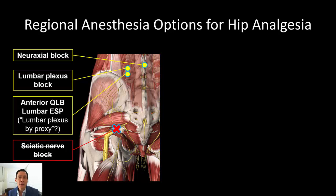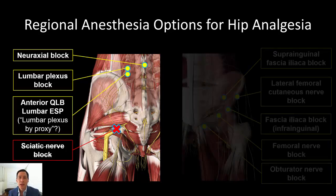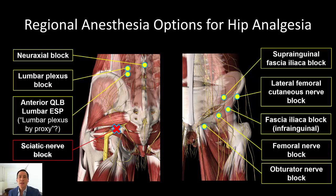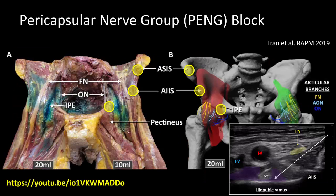The sciatic nerve is not usually targeted because of the motor block that usually accompanies it. Instead, we usually target the branches of the lumbar plexus: the lateral femoral cutaneous nerve, femoral nerve, and obturator nerve. We are often chiefly interested in the articular branches of these nerves, hence the development of the PENG block and related subpectineal and iliopsoas plane injections, which target these specific terminal branches.